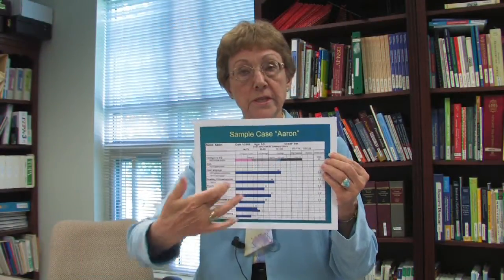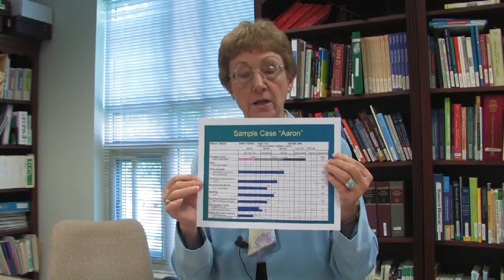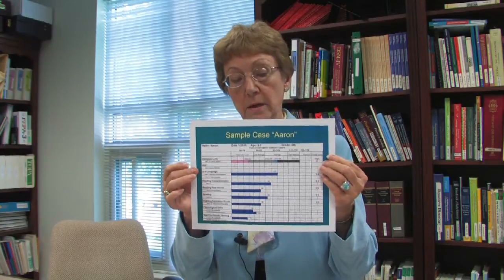First, we look to see if the child has at least average intelligence, which tells us he is able to learn. Then we look to see what the child's ability is with oral language. For Aaron, he had very average oral language.